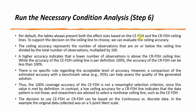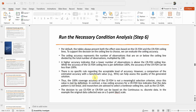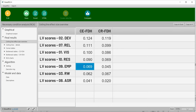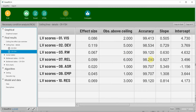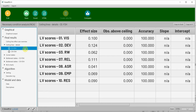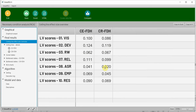By default, the table presents both effect sizes. To support the decision on which ceiling line to use, we can evaluate ceiling accuracy or simply consider whether our data is continuous or discrete. In this case, the data is discrete. The ceiling accuracy for CE-FDH is 100% by definition. The CR-FDH accuracy is also quite high in this example, but the difference between the two is not large.